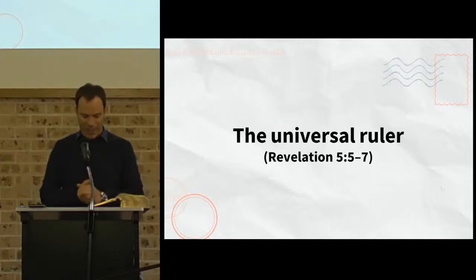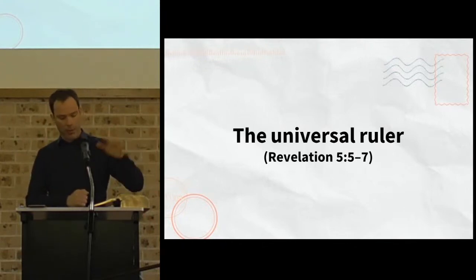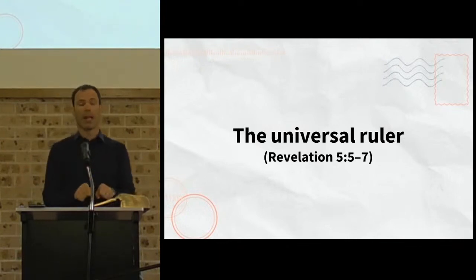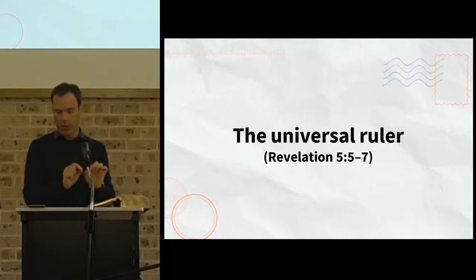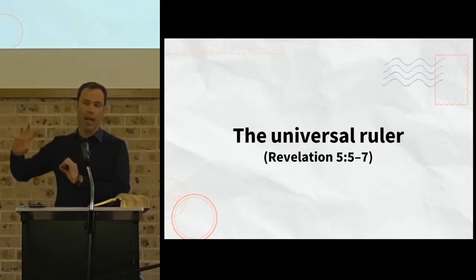Now this is music to John's ears. The worthy one has been found. And the elder here piles on the titles of authority and royalty. The line of the tribe of Judah, the root of David, grand titles for a great ruler. Nowhere else in the Bible are these specific titles used. But what these titles do is that they take language from two well-known Bible promises and they ratchet them up a few notches.